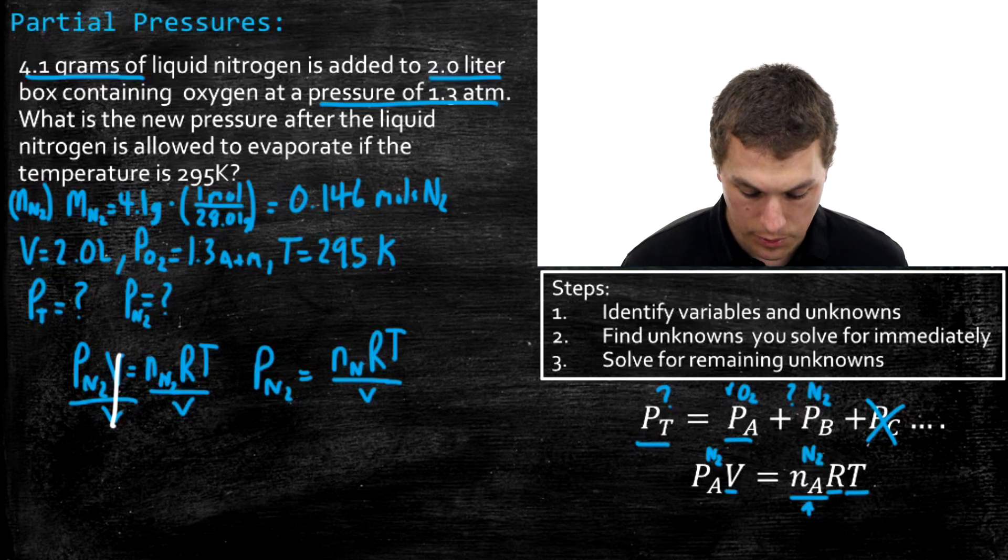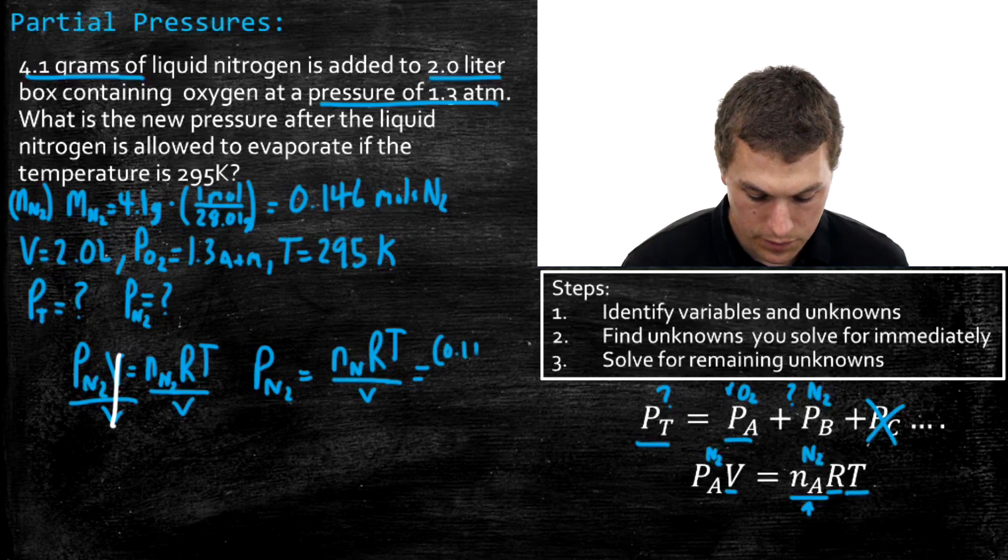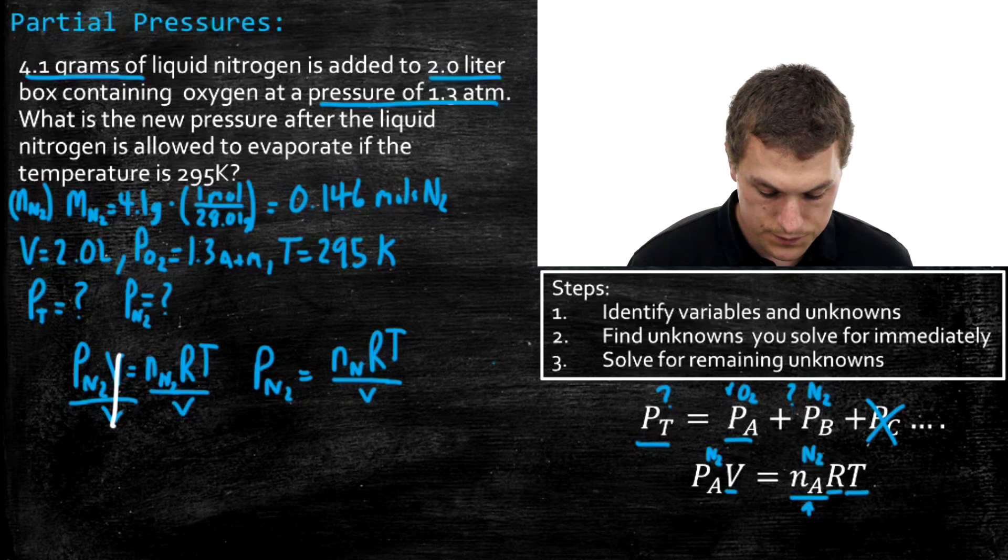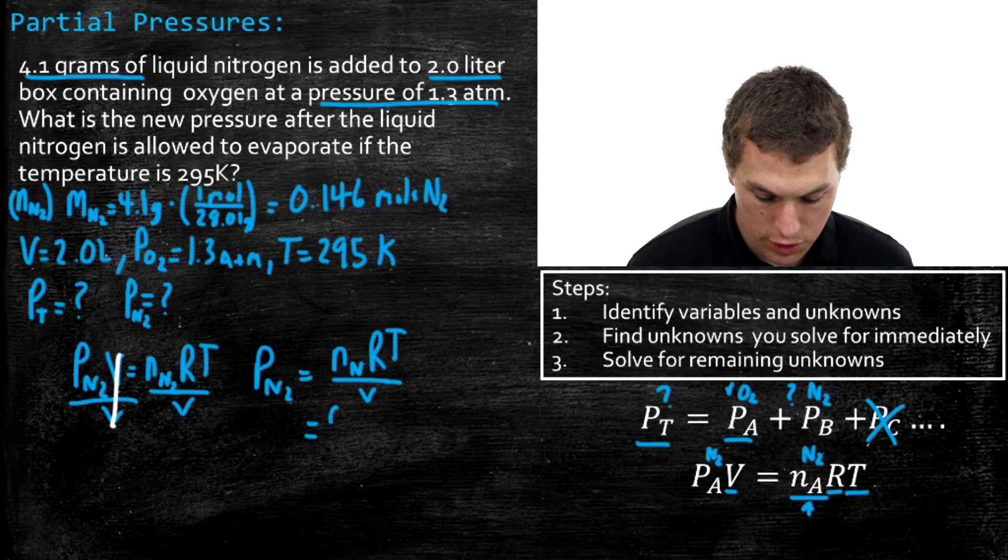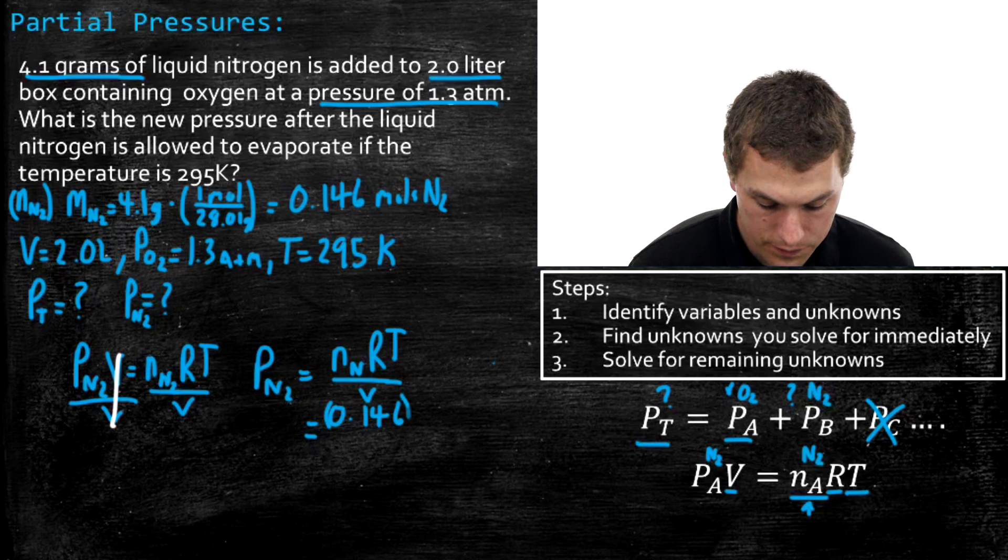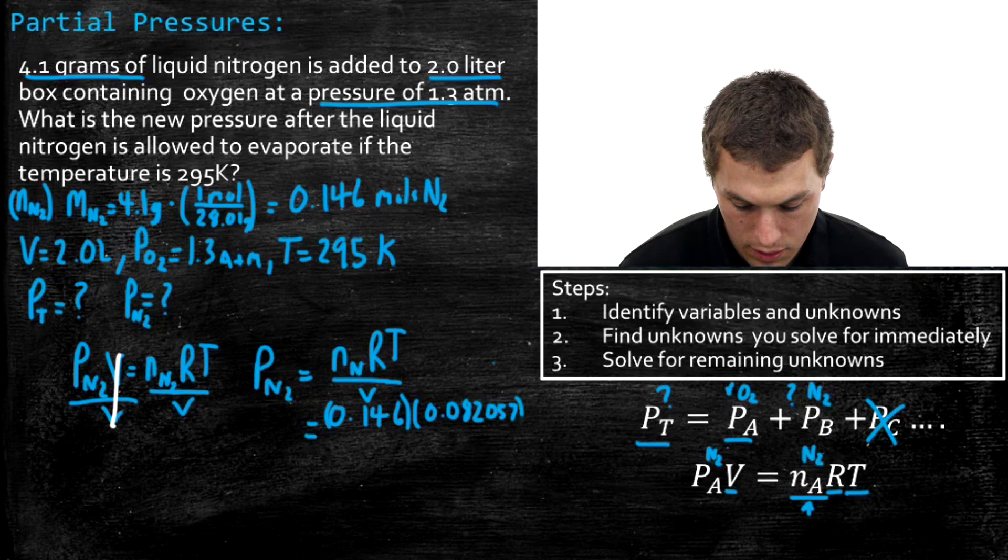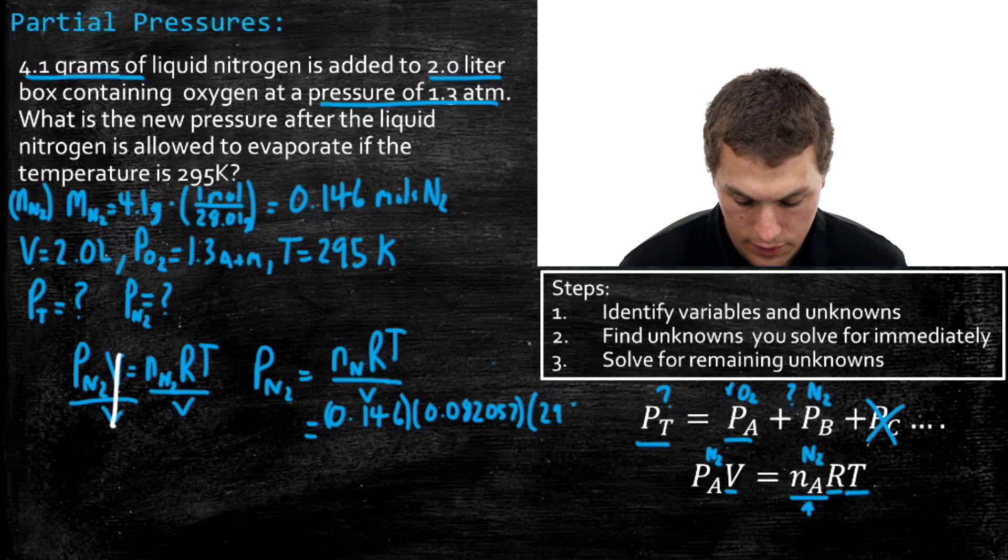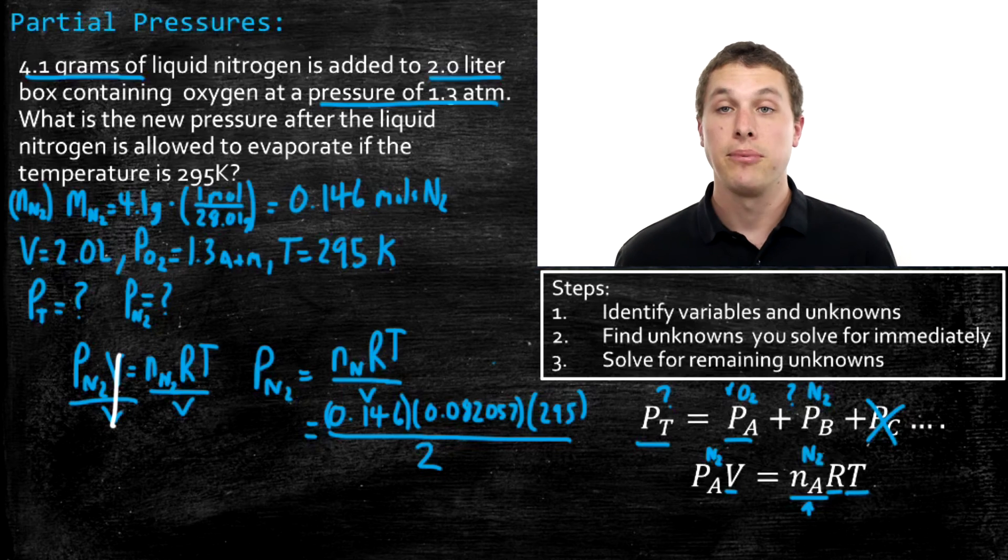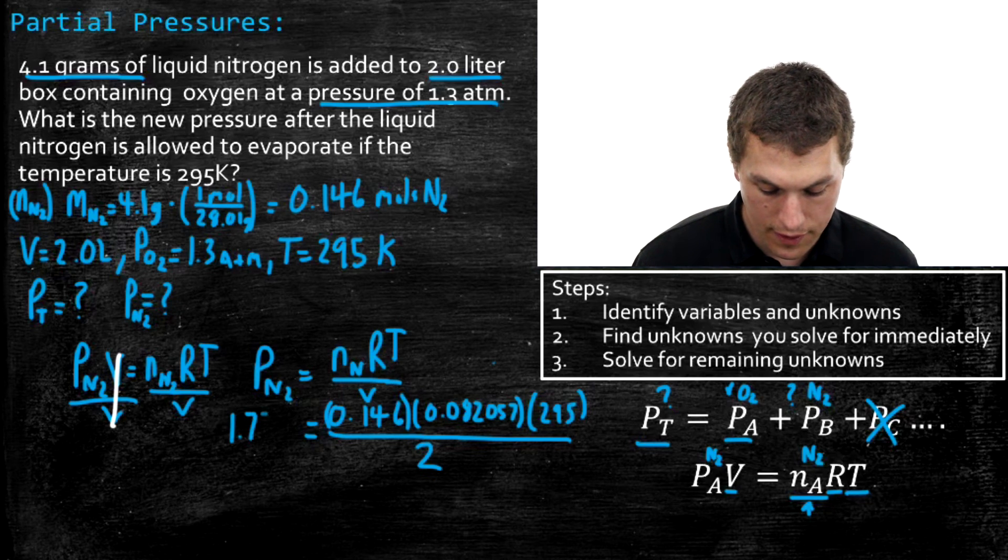And now we just plug in those variables. And so our moles we just found was 0.146. It's starting to run out of space here, let's do it right below it instead. So our moles are 0.146. And our gas constant is 0.082057. And our temperature in this case is 295 Kelvin. And our volume is 2 liters. And when I plug that into my calculator, I'm gonna get out the partial pressure from nitrogen, and it turns out to be 1.77 ATMs.